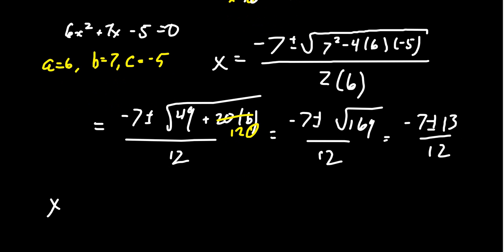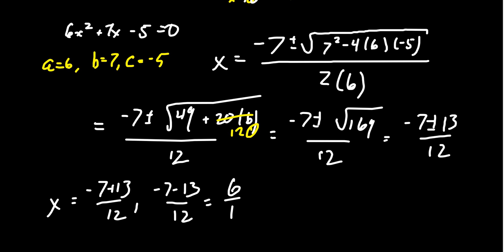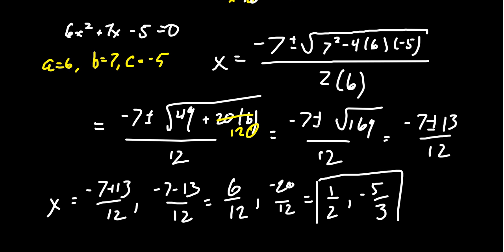So we get negative 7 plus or minus 13 over 12, giving us two cases to consider: negative 7 plus 13 over 12, and negative 7 minus 13 over 12. In the first case, you get positive 6 over 12, which simplifies to one-half. In the second case, you get negative 20 over 12 — 12 doesn't divide into 20 perfectly, but they share a common factor of 4, leaving behind negative 5 thirds. So we are able to solve this quadratic equation using the quadratic formula.